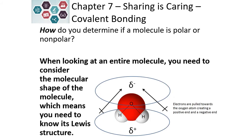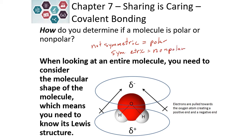When we consider the polarity of an entire molecule, we need to think about the shape, which means we need to know the Lewis structure. If the molecule is not symmetric, it is going to be polar. If it is symmetric, it is going to be nonpolar — there will be a more even distribution of electrons. Our water is not symmetrical: it is symmetric left to right but not top to bottom, so it is a polar molecule. The electrons are pulled toward the more electronegative element, oxygen.